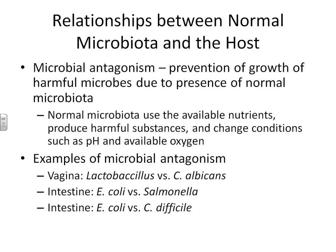Moving further into how normal microbiota interacts with us as the host, we need to look at microbial antagonism — when the growth of good bacteria prevents the growth of harmful bacteria. For example, consider the antagonistic relationship between Lactobacillus and Candida albicans in the female vagina. In this region, we have both bacteria, Lactobacillus, and yeast, Candida. As long as we are in a normal healthy state, both live at a certain concentration to keep one from outgrowing the other.